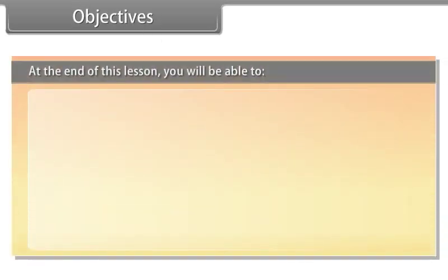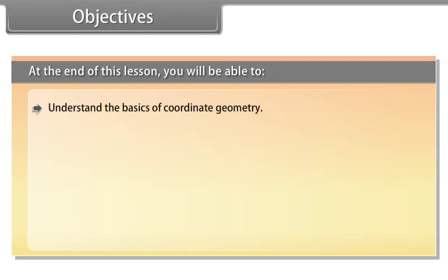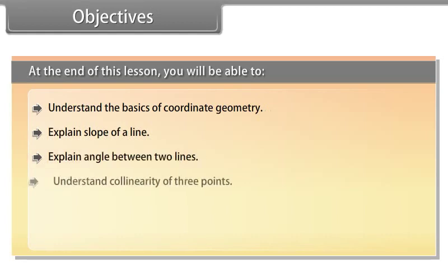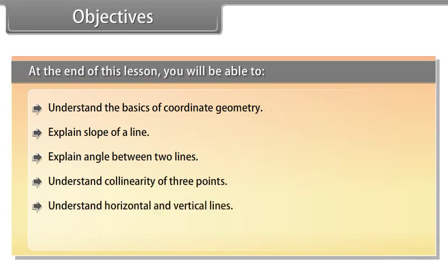At the end of this lesson, you will be able to: understand the basics of coordinate geometry, explain slope of a line, explain angle between two lines, understand collinearity of three points, understand horizontal and vertical lines, and write point-slope form and two-point form.